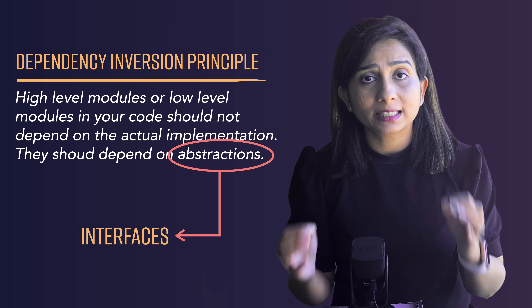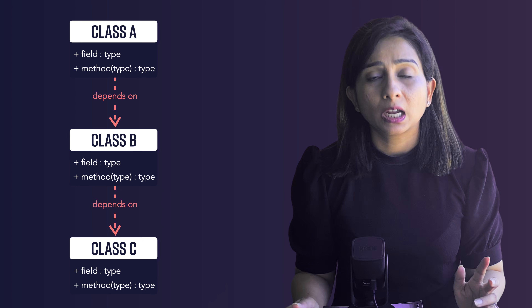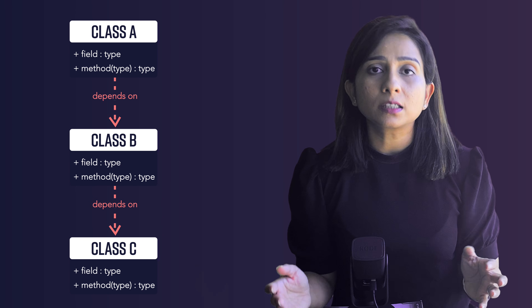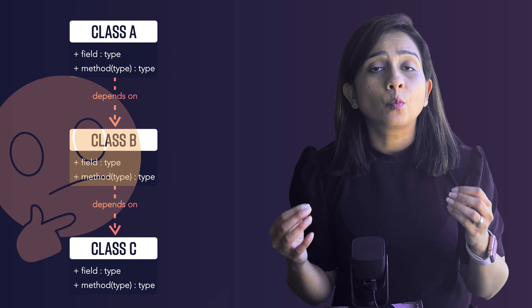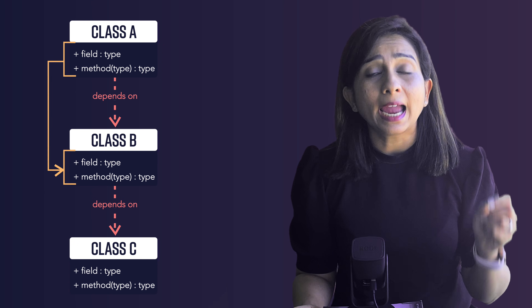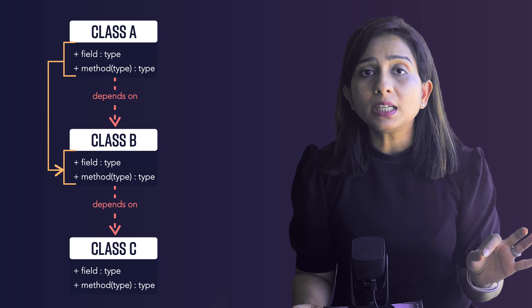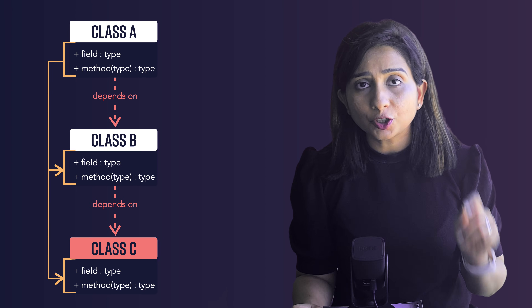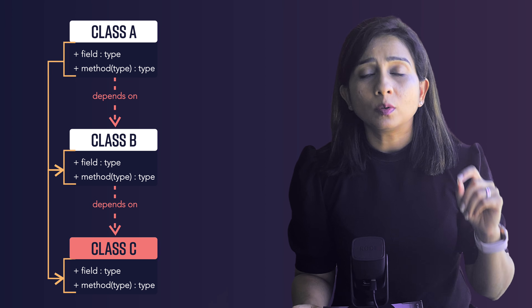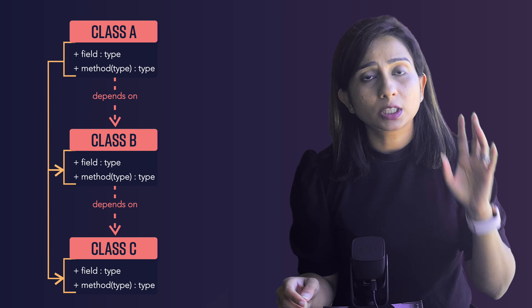Let's look at a simple class diagram where class A depends on class B, and class B depends on class C. Looking at this, it doesn't seem like there is a problem. But where does the problem occur? Class A somehow knows about the implementation of class B, and hence class A is dependent on class B. Similarly, class B is dependent on class C. If something in class C changes, it has to impact class B, and if something in class B changes, it will impact class A.